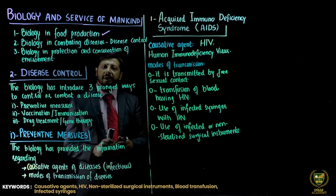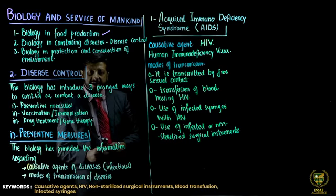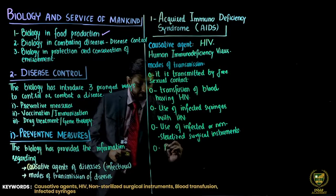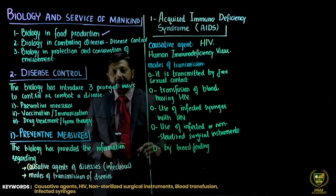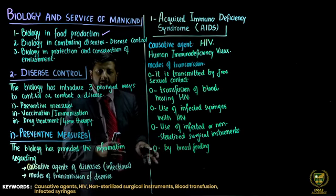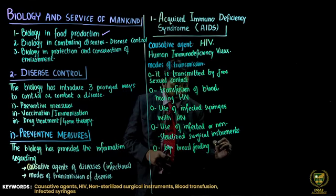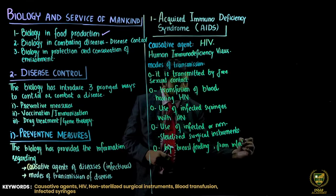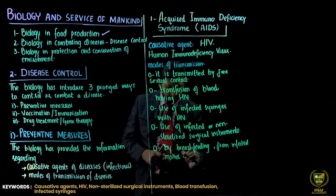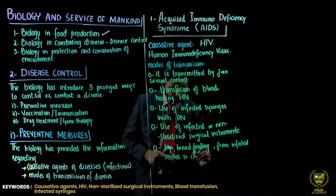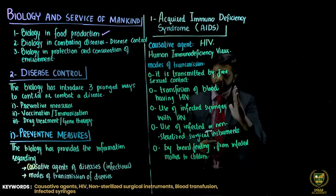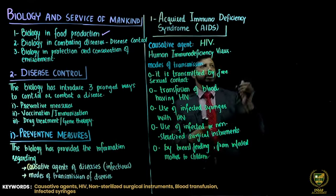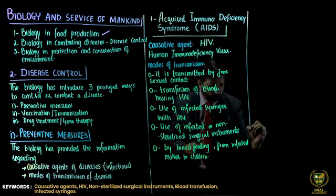AIDS can also spread through normal secretions. If a mother has HIV and her child is breastfed, the child may also contract it — by breastfeeding from an infected mother to children. These are the modes of transmission of HIV; if we avoid these, HIV can be minimized and controlled.